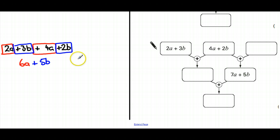That's how we gather those ones together. On the right-hand side here, we've got a box missing which has been added to 4a plus 2b to give 7a plus 5b. Now you can do it as a subtraction.